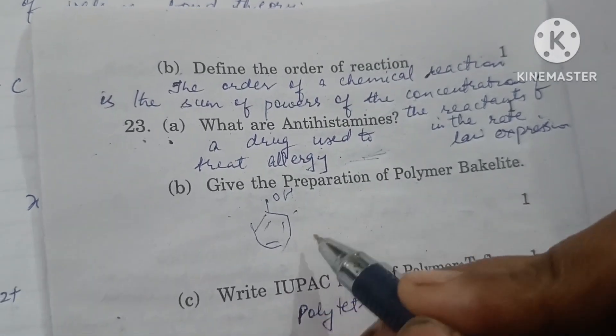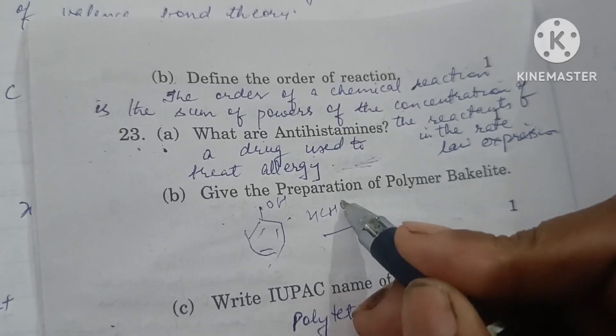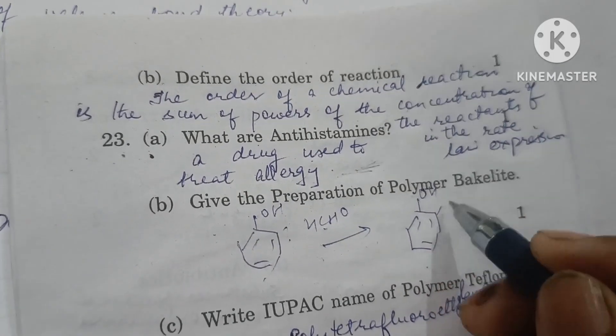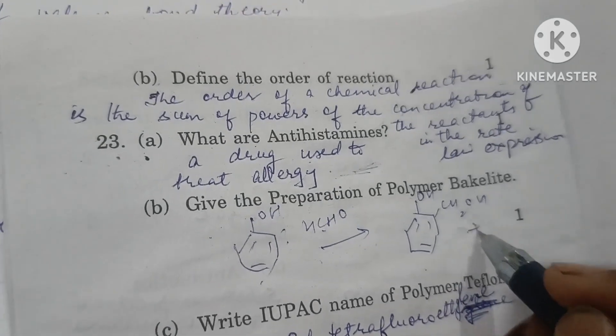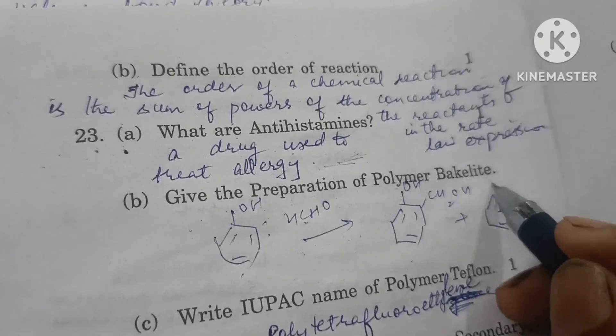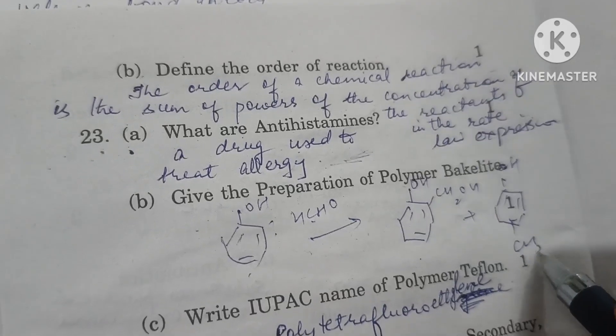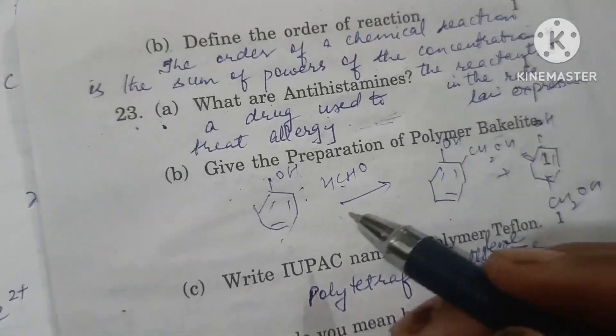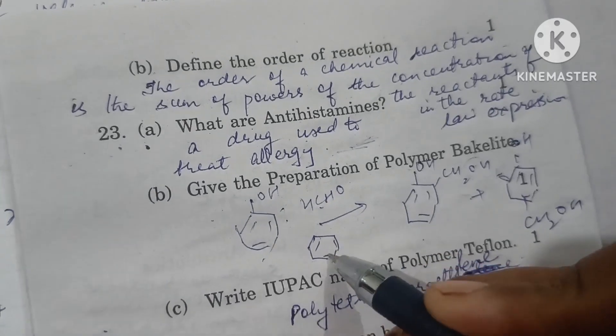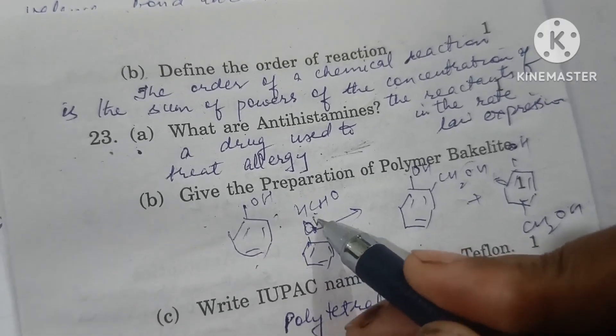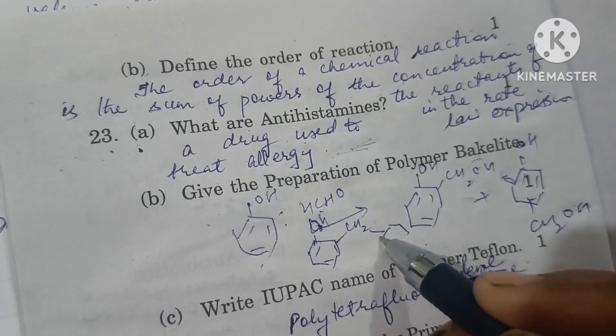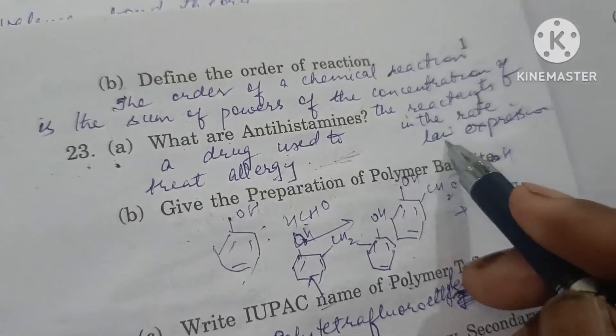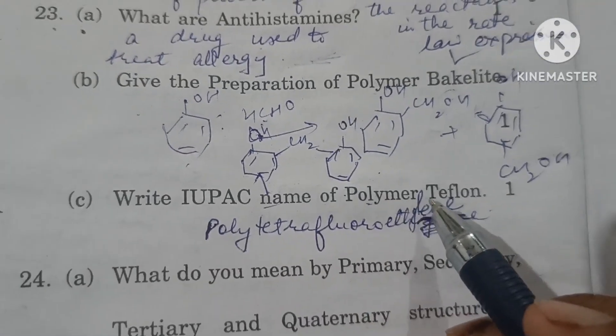Give the preparation of polymer bakelite. When we react phenol with formaldehyde, at its ortho and para positions, formaldehyde attaches as CH2OH. This CH2OH at ortho and para positions further combines to form a three-dimensional network solid bakelite. OH groups form water and leave, and through CH2 groups it attaches left to right and top to bottom, forming a three-dimensional polymer called bakelite.